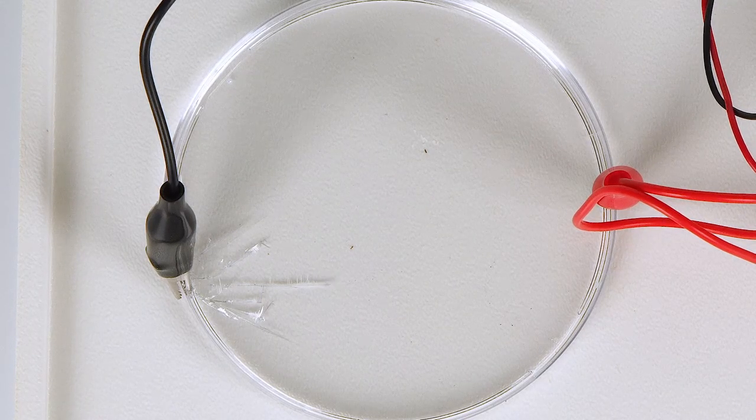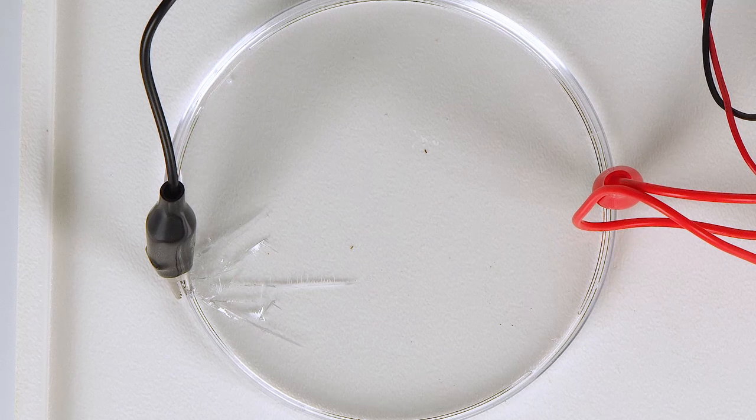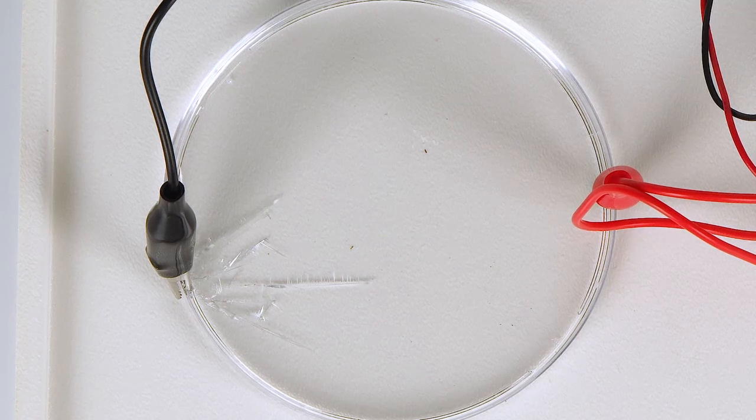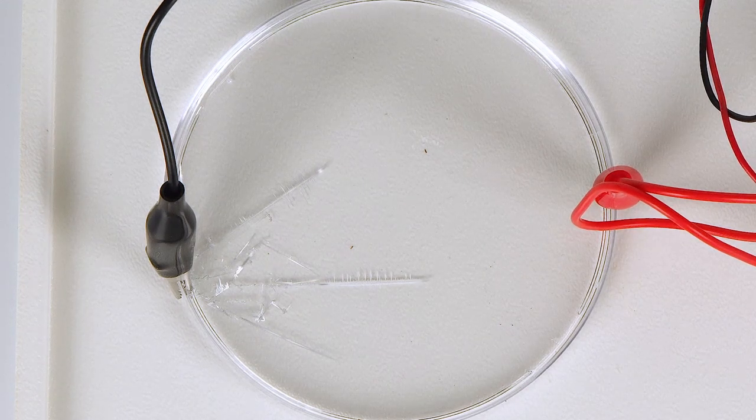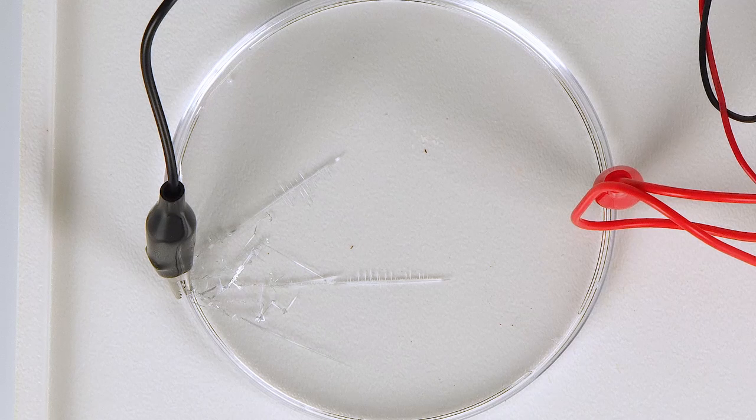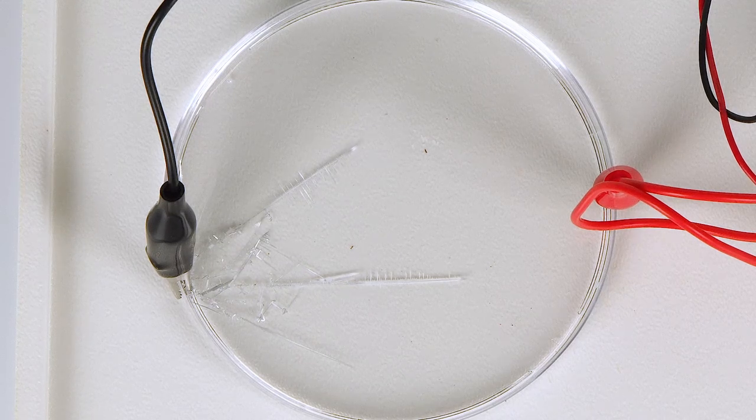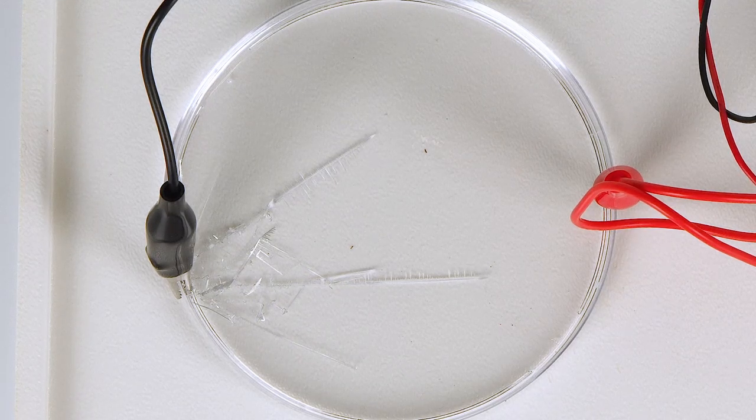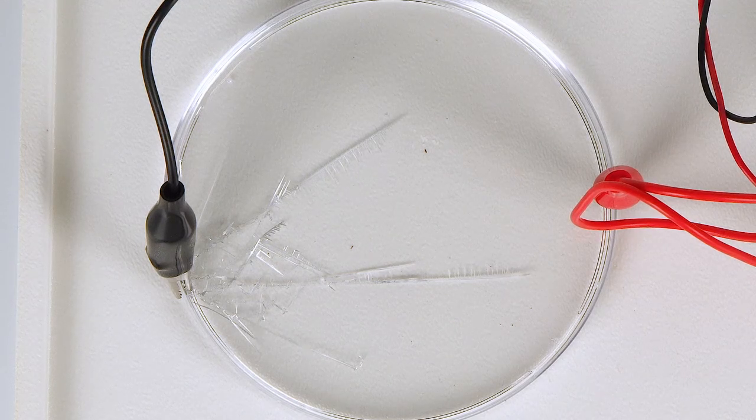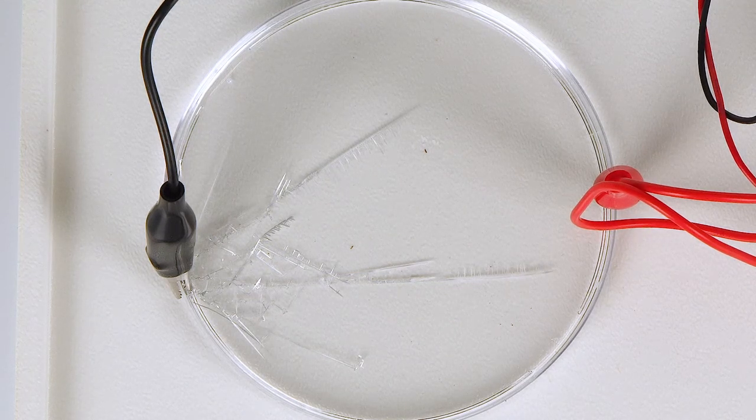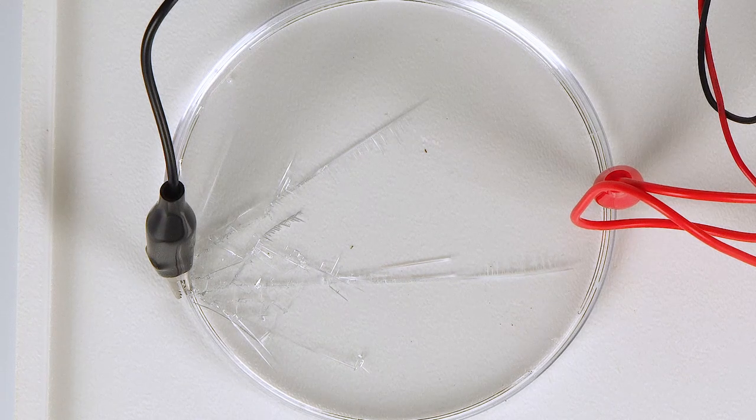When we connect the wires, we close the electric circuit and electric current begins to run through it. The red wire becomes positively charged, while the black one becomes negatively charged, which means that it has an excess of electrons. The excessive electrons from the black wire go to the tin ions in the solution, reducing them to metallic tin, which grows in the petri dish in the form of beautiful dendrites.